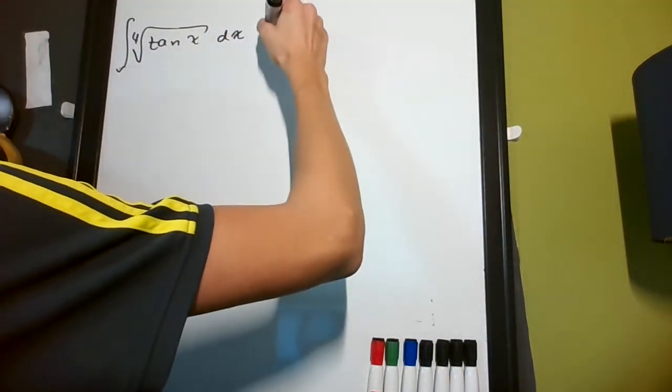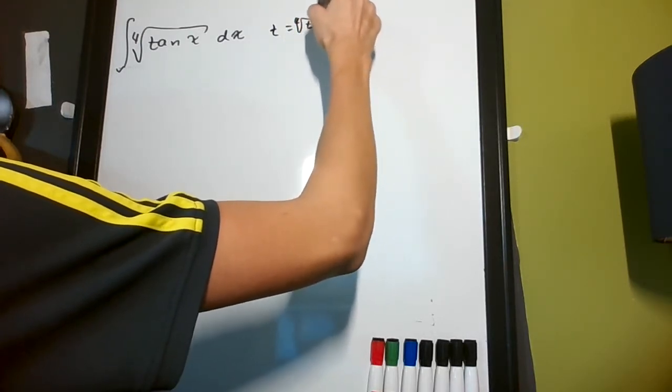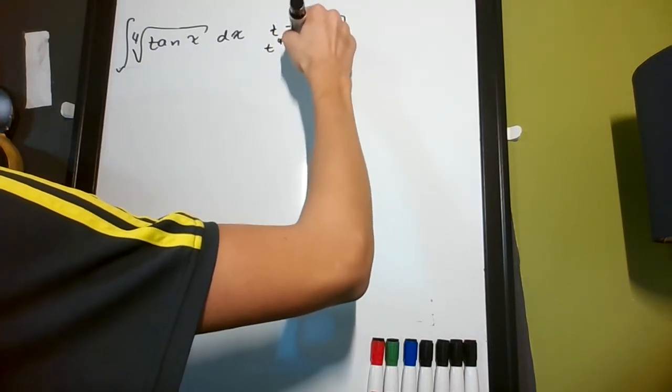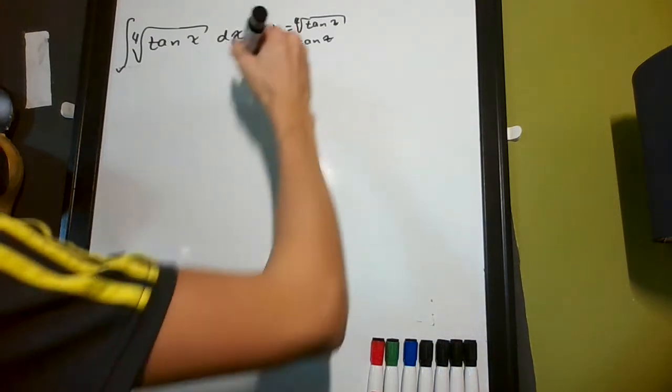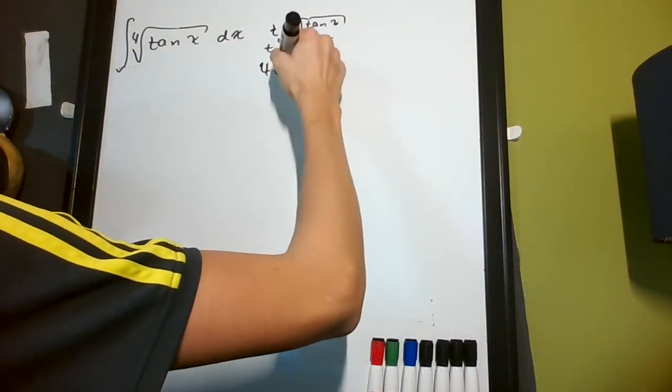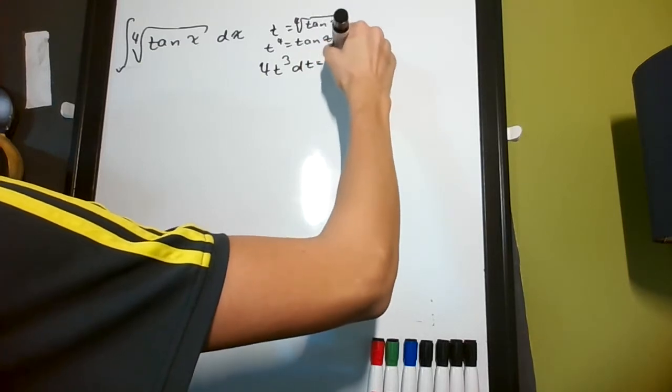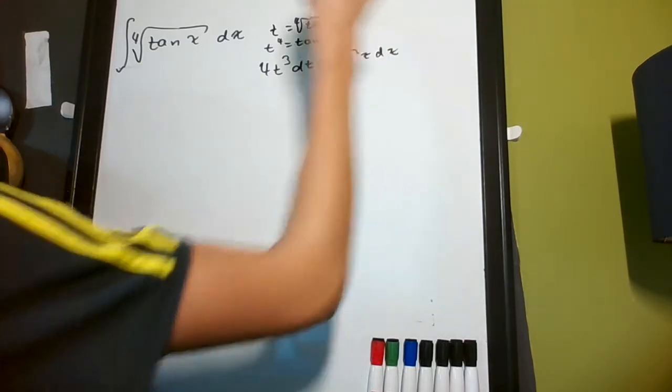So, let's let t equal the 4th root tangent x. So, that t to the 4th equals tangent x. Right? So, then differentiating both sides, I get 4t cubed dt is going to be equal to secant squared x dx, right?